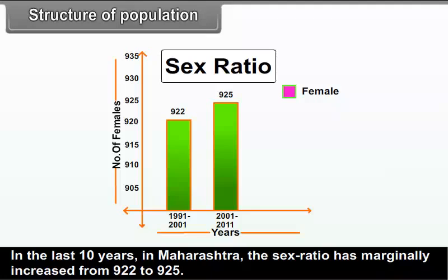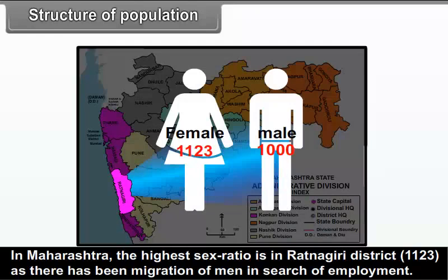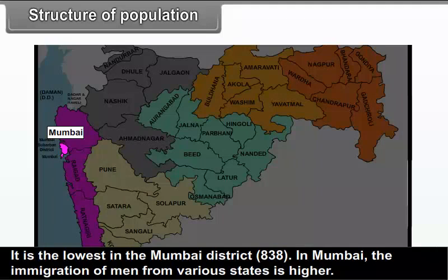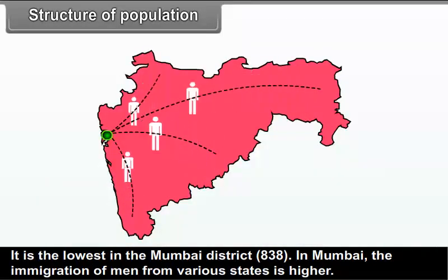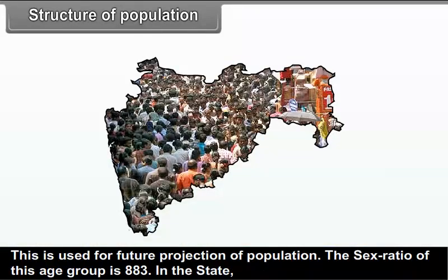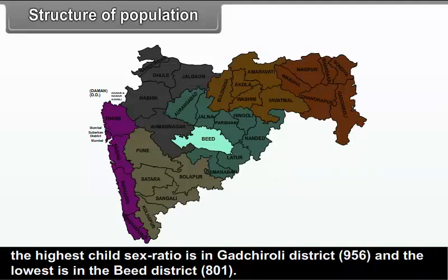In the last 10 years, Maharashtra's sex ratio has marginally increased from 922 to 925. The highest sex ratio is in Ratnagiri district at 1,123, as men migrate away in search of employment. It is the lowest in Mumbai district at 838, due to higher immigration of men from various states. The sex ratio for the age group 0 to 6 years is also derived as a social indicator used for future population projection. The child sex ratio for this age group is 883. The highest child sex ratio is in Gadchiroli district at 956, and the lowest is in Beed district at 801.